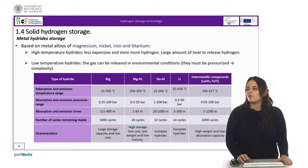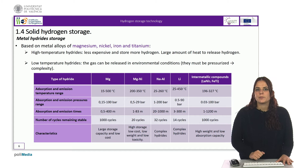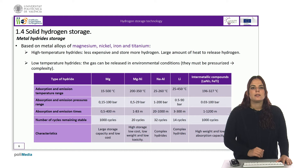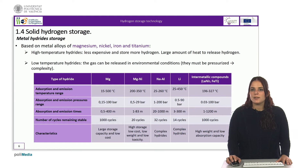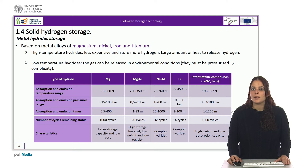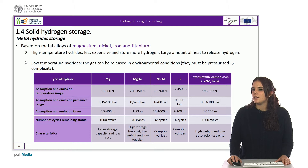Within the group of complex hydrides are those based on sodium aluminate and lithium. The main characteristic of hydrides based on sodium aluminate is that they have an absorption and emission temperature range between 25 and 260 degrees Celsius, and the number of cycles that they remain stable is 32. On the other hand, for lithium-based hydrides, the absorption and emission temperature range is between 25 and 450 degrees Celsius, and the number of cycles that remain stable is 14.